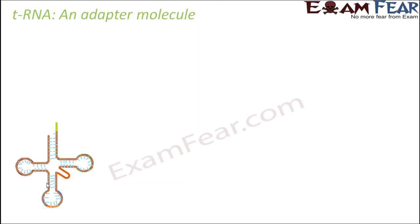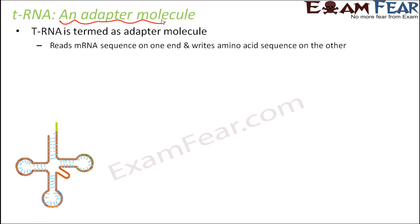tRNA is termed an adaptor molecule. This is because of the special property of tRNA — on one hand it can connect to an amino acid, and on the other side it can also connect to the mRNA. Due to this it is termed the adaptor molecule: it can read the mRNA sequence on one end and carry the amino acid sequence on the other end, doing a two-in-one job. tRNA plays one of the most crucial roles during the process of translation.